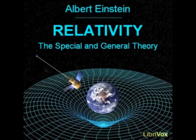In two respects, this result is of great importance. In the first place, it can be compared with reality. Although a detailed examination shows that the curvature of light rays required by the general theory of relativity is only exceedingly small for the gravitational fields at our disposal in practice, its estimated magnitude for light rays passing the sun at grazing incidence is nevertheless 1.7 seconds of arc. As seen from the Earth, certain fixed stars appear to be in the neighborhood of the sun, and are thus capable of observation during a total eclipse of the sun. At such times, these stars ought to appear to be displaced outwards from the sun by an amount indicated above, as compared with their apparent position in the sky when the sun is situated at another part of the heavens.